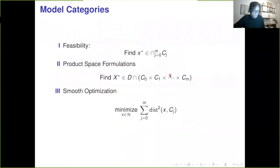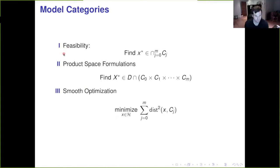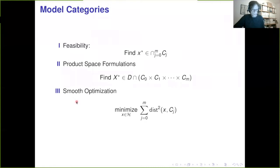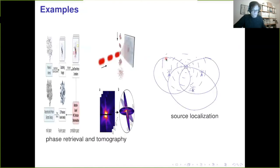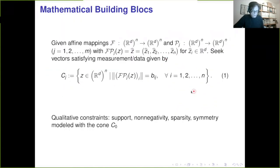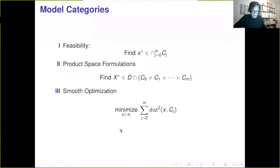There are different kinds of models for this type of problem, categorized by the underlying smoothness. The least smooth formulation is the feasibility formulation: find any point in the intersection of all constraint sets C_J and possibly C_0. I'm not asking for much — except that the intersection is non-empty, which actually turns out to be quite a lot to ask. In most applications, this intersection will be empty, so you need to be able to deal with that.